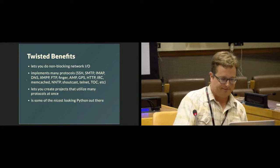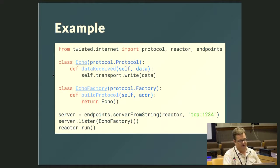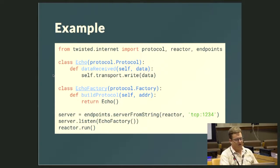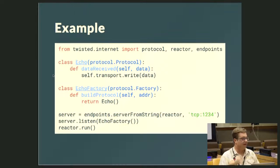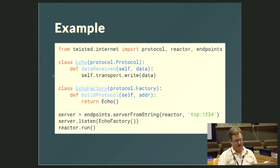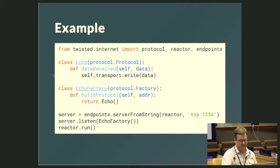It's also some of the nicest looking Python out there. Here's an example — a simple echo server where we define a protocol. This handles what we do when we receive data; in this case, we just return it, we just write it back. Then we have a factory that will build this protocol for every single connection we get. Then we can start a reactor. For every new connection — Telnet is the best way to play with this — you just Telnet, write to port on localhost, type some stuff, hit enter, and it'll print it back out at you. It's not that much code and it will scale rather dramatically.